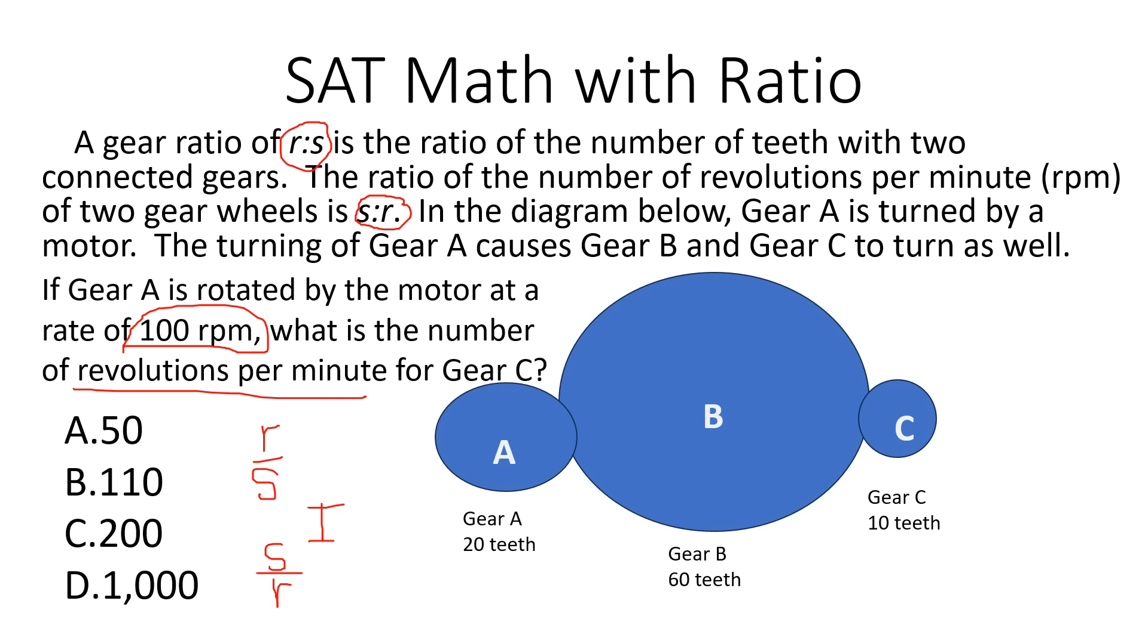All you have to do is just think about what they're asking you. There's some other part to this that you don't want to think about too much. It says gear A is turned by a motor and the turning of gear causes C to turn as well. Please don't worry about that. What you want to worry about is what they asked you, and I'm going to go ahead and highlight what they're asking you. They're asking you if gear A is rotated by a motor at a rate of 100 revolutions per minute RPMs, what are the number of RPMs or revolutions per minute for gear C? So all you really have to do is look at A and C.